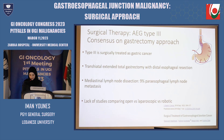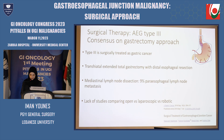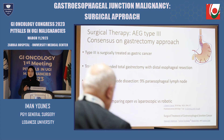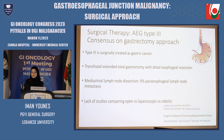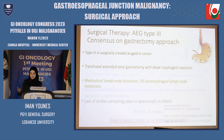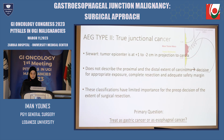In most cases, AEG type 3 cancer is surgically treated as a gastric cancer, meaning a total gastrectomy is performed. We go for gastrectomy rather than esophagectomy in type 3 cancers because the esophagus is usually not infiltrated by the tumor, which means we can safely perform an R0 resection. There is some discussion on the role of mediastinal lymph node dissection, since Seward et al. reported that AEG type 3 has 9% paraesophageal lymph node metastasis, so a transhiatal extension of a total gastrectomy was reasonable. When comparing open versus laparoscopic versus robotic approaches, there is currently a lack of studies needing more data and investigation.